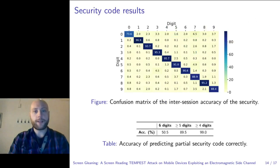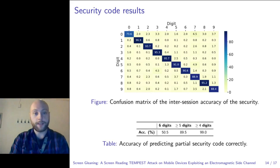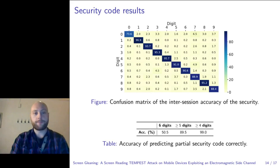Well, if we take a look at the security code results, we can see that when using proper cropping of digits and collecting the data in different profiling sessions, we can get rid of most of the environmental noise, and thus, by applying an inter-session experiment, we can obtain high accuracy. Here, inter-session means that we collected data from different phones of the same model during the profiling phase, and during the attack phase, we obtained very few misclassifications. If we take a look at the table below, we see that if we want to recover the security code of 6 digits with the first guess, we have 50% accuracy.